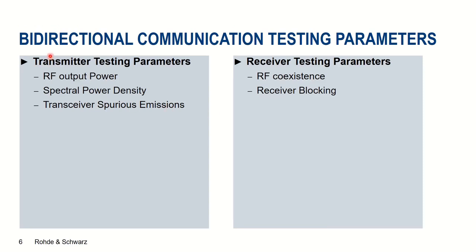From a test and measurement point of view, we have to perform bi-directional communication testing. We can divide this into two parts. One is transmitter testing — what we transmit out of our devices — including output power measurement, spectral power density measurements, and spurious emissions, so we do not have third-order harmonics blocking somebody else's transmission. We also need to make sure our receivers perform as expected in harsh RF environments, requiring RF coexistence tests.